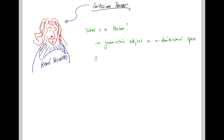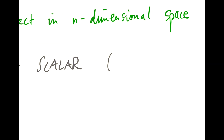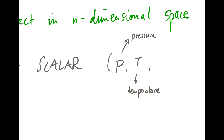A zeroth order tensor is called a scalar. Scalar quantities in this class that we will come across are typically presented as fields. For example, they are pressure P, temperature T, and density Rho — this here is the Greek letter Rho.